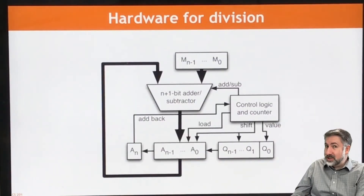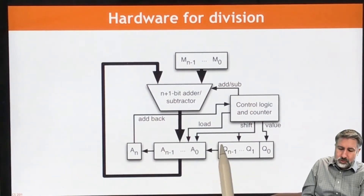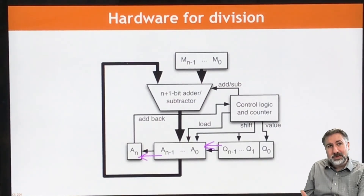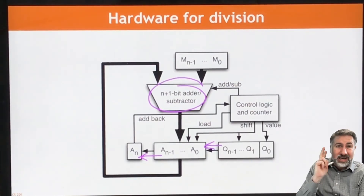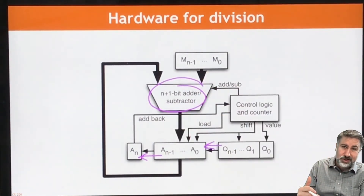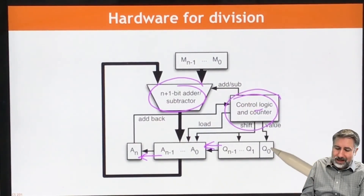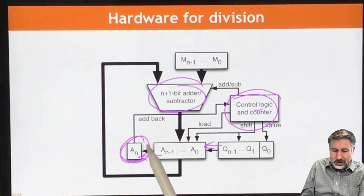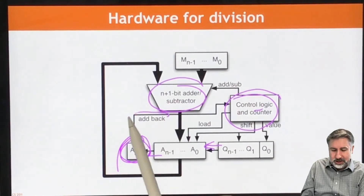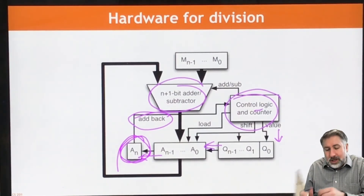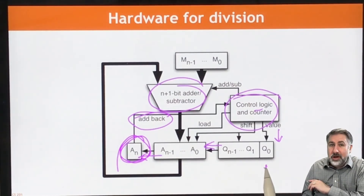The hardware for division looks very similar to the hardware for multiplication. We're shifting to the left instead of shifting to the right, and we're subtracting now instead of adding. We need an adder-subtractor because we have to be able to subtract first, and then if our result doesn't fit, we have to be able to add it back again. We need more complicated control logic to tell it when to add and when to subtract. We're looking at the sign bit to tell us whether the result is negative or positive, and putting our new quotient values in accordingly. Instead of checking a bit to decide whether to add or subtract, we put our result bit based on whether the subtraction was negative or positive.